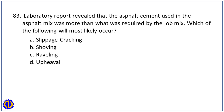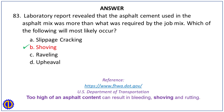Question 83. A laboratory report revealed that the asphalt cement used in the asphalt mix was more than what was required by the job mix. Which of the following will most likely occur? A. Slippage cracking. B. Shoving. C. Raveling. D. Upheaval. Answer: B. Shoving. Reference: U.S. Department of Transportation — too high an asphalt content can result in bleeding, shoving, and rutting.